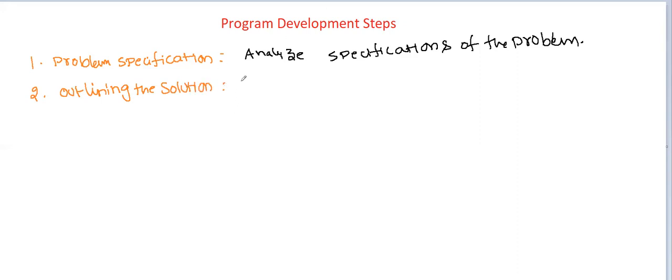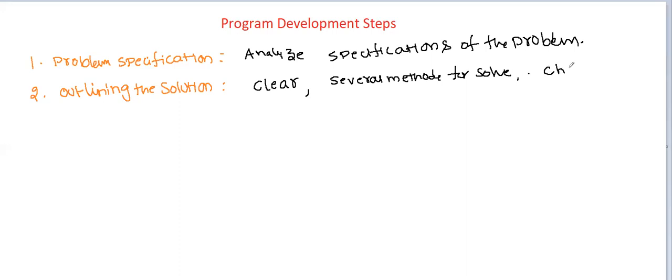Outlining the solution means: for this problem, this is the input, this is the operation, this is the output. Once the problem is clear, we have several methods for solving it. We have to choose one solution among the many possible ways, and the selected choice must be time effective and space effective — completed within a less amount of time and a less amount of space.